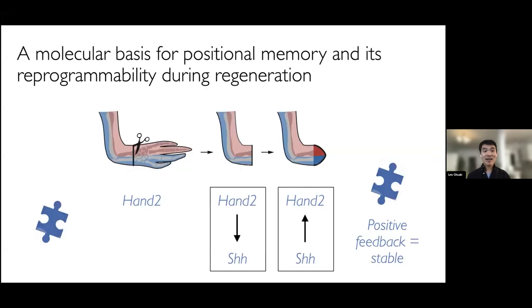All in all, we think that we're one step closer to a molecular basis for positional memory and its reprogrammability during regeneration. From the axolotl limb, if we look at the blue puzzle pieces, we found that they continuously express the HAND2 transcription factor, and this presumably primes the posterior cells so that after an amputation, they're able to induce expression of sonic hedgehog in the posterior blastema. Later during regeneration, secreted sonic hedgehog feeds back and induces HAND2 expression in nearby posterior cells — and we think that this positive feedback architecture, HAND2 to sonic hedgehog and sonic hedgehog back to HAND2, doubly preserves posterior positional memory throughout a regeneration cycle and accounts for its stability.